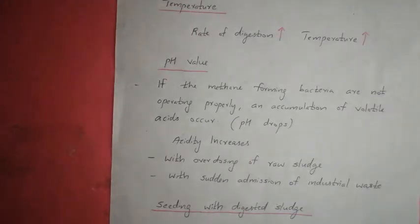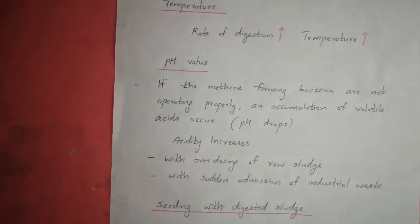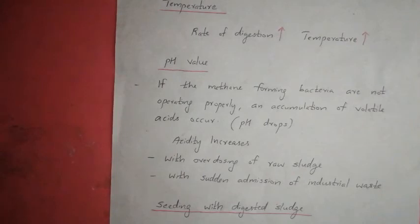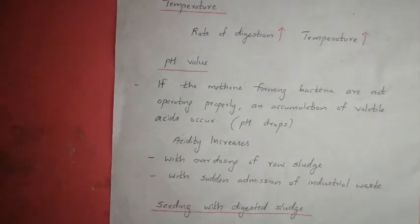The bacteria involved are also called methane formers. If the methane-forming bacteria are not operating properly, an accumulation of volatile acids occurs. When methane-forming bacteria do not work properly, accumulation of volatile acids occurs and the pH drops.